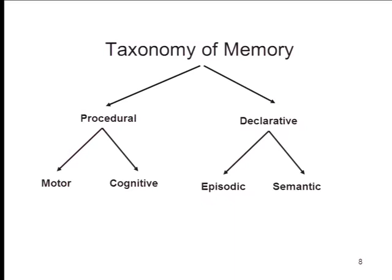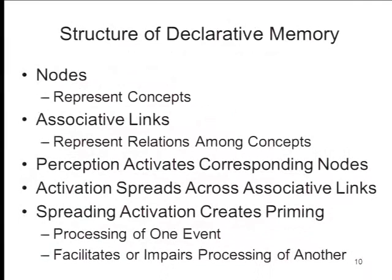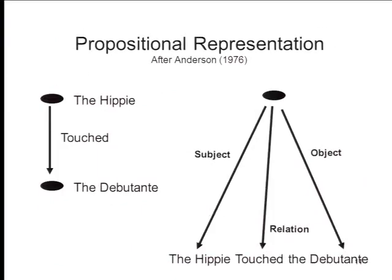In these lectures we're going to focus on declarative memory — specifically how we remember information about someone we've met, known as person memory. Declarative memory holds knowledge of a factual nature that has truth value, meaning it's either true or not. All pieces of declarative memory can be given some kind of propositional representation: 'John smiled at Lucy,' 'neurotics are anxious and excitable.' In terms of psychological theory, we often represent declarative knowledge in an associative network structure with nodes representing concepts and associative links representing relations among concepts. When we perceive something, active perception activates nodes corresponding to the event in memory, and activation spreads across associative links — a process forming the basis for priming effects, where processing one event facilitates processing of another.